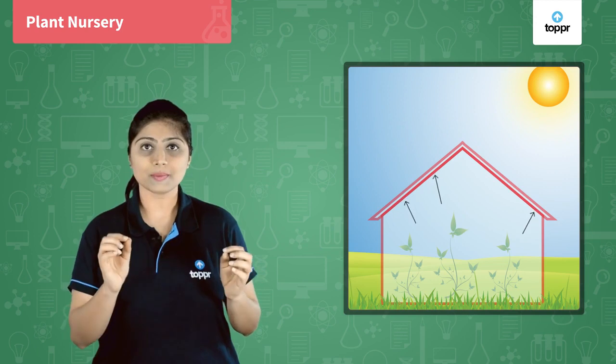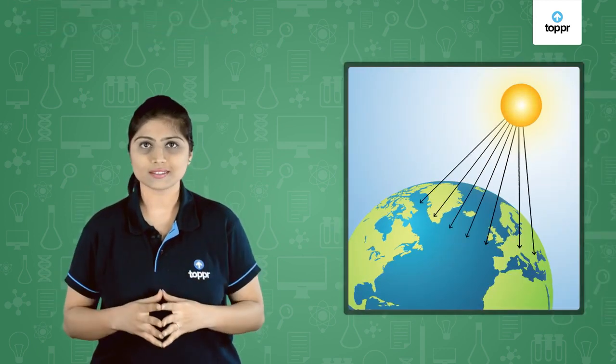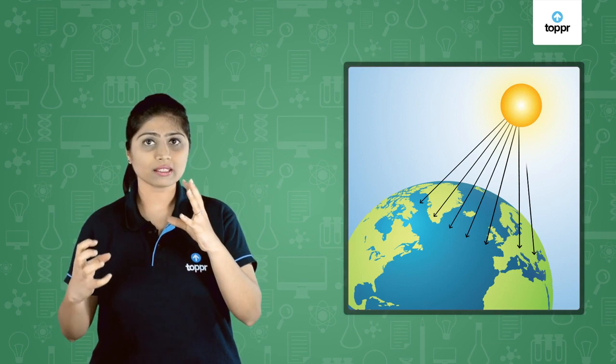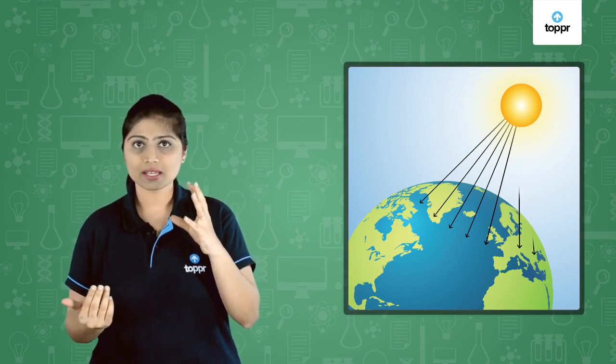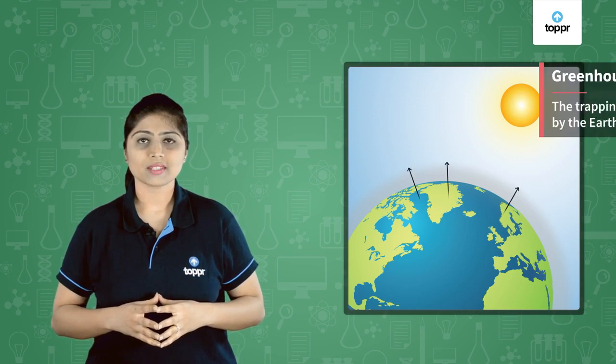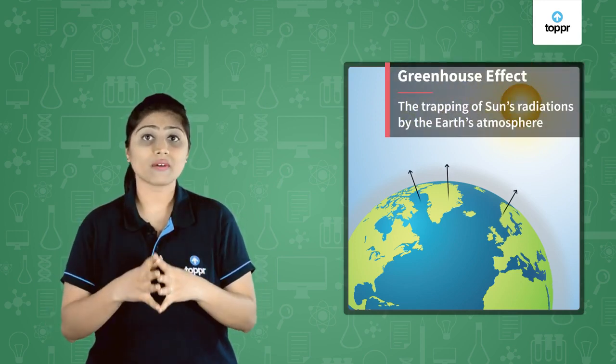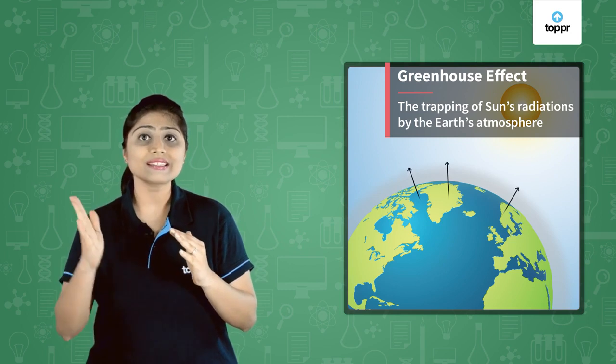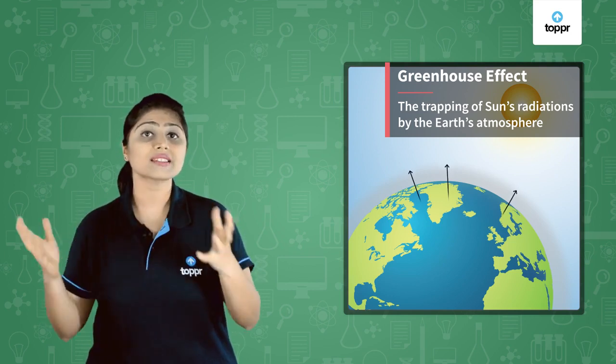A similar situation happens when sun rays fall on earth. A part of the radiation of sun is absorbed by the earth's surface, which warms the surface, and another part is reflected back into space. Now some of these reflected radiations are trapped by the atmosphere, which further warms the earth. This effect is called the greenhouse effect.